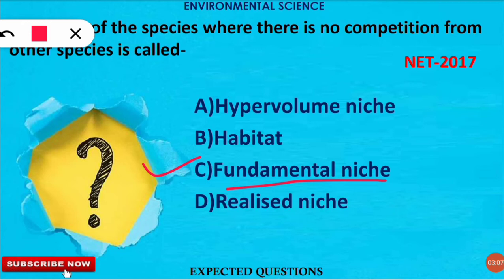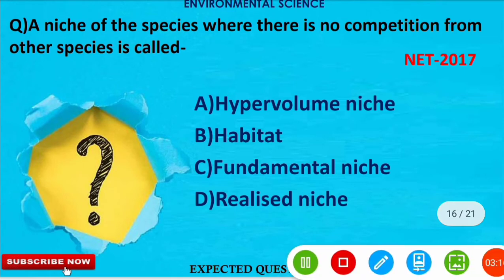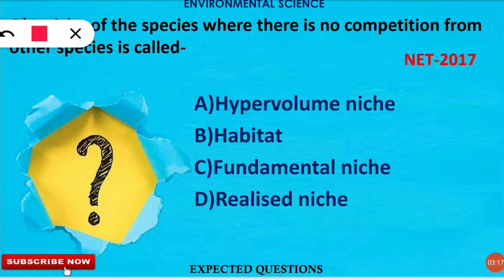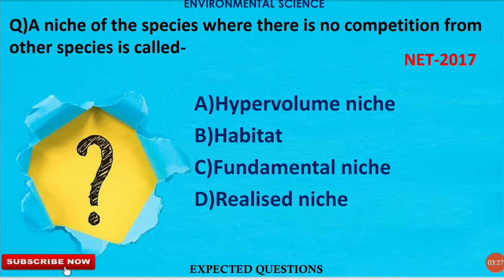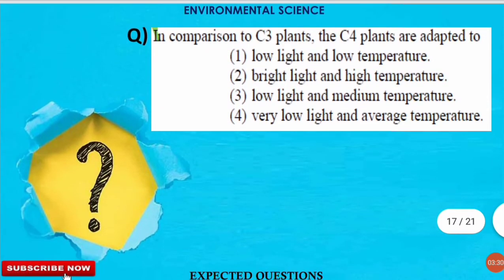The realized niche, on the other hand, occurs when there is competition and the species has to adapt or develop certain mechanisms to cope with the environment — when the species has a competitor present. That is called the realized niche.